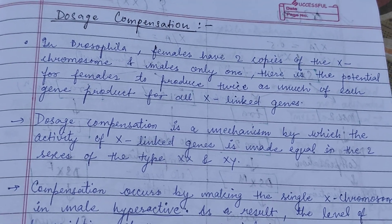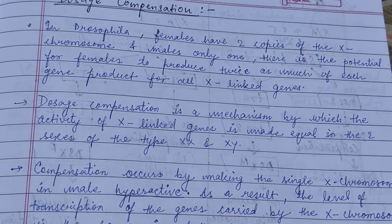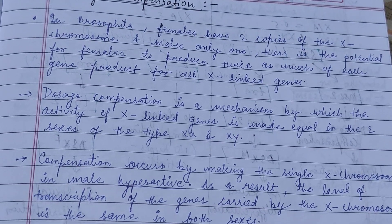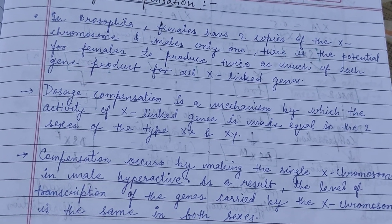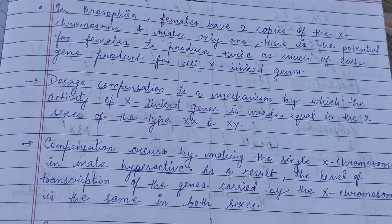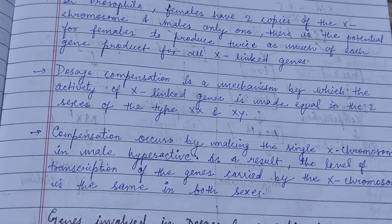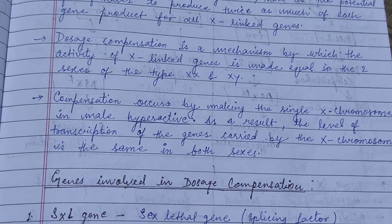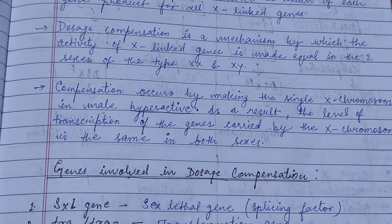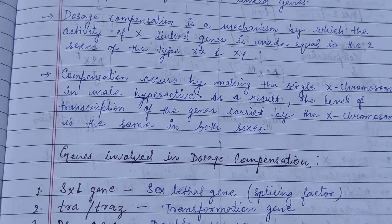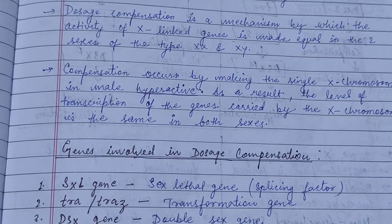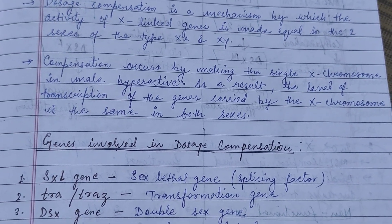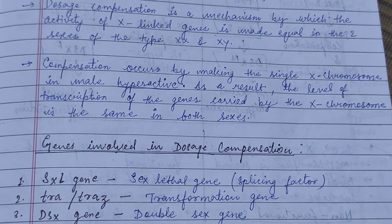The next subtopic is dosage compensation in Drosophila. In Drosophila, females have two copies of the X chromosome (XX) and males have only one X — with either a Y or absence of Y. Dosage compensation is a mechanism by which the activity of X-linked genes is made equal in the two sexes, XX and XY.